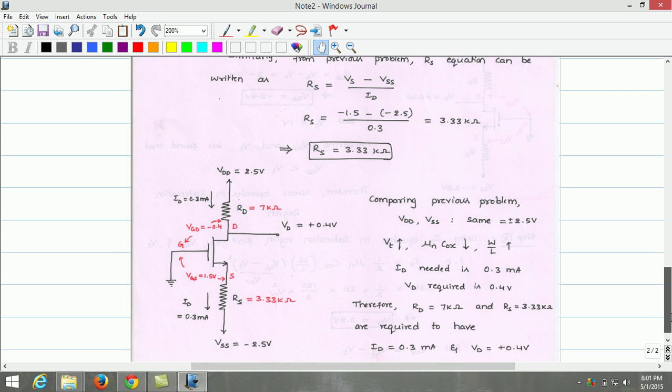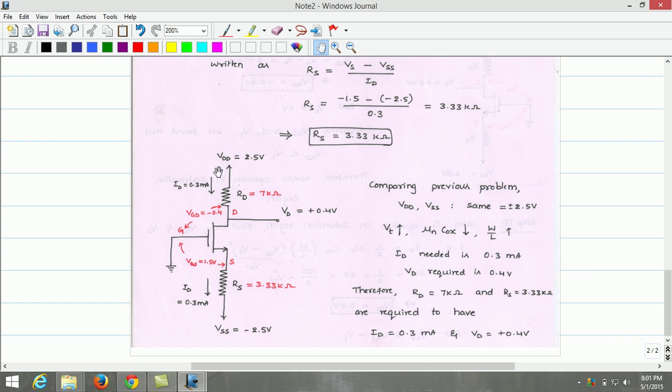Once we estimate the Rd and Rs, we can substitute in the original circuit. The design circuit is as follows: supply voltage is 2.5V and minus 2.5V, drain voltage is 0.4V.